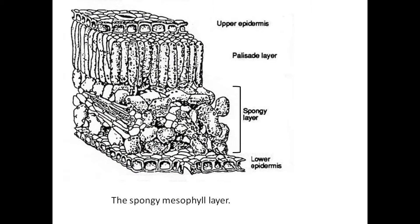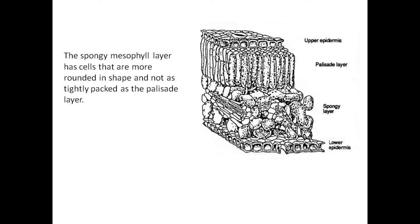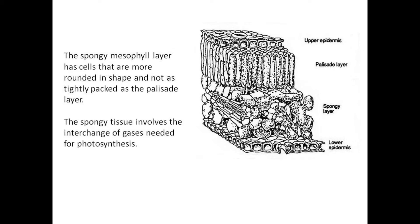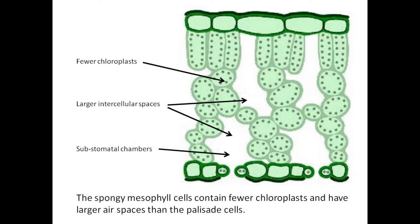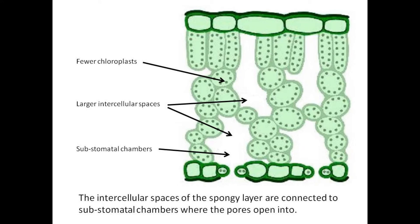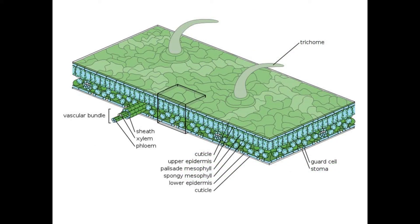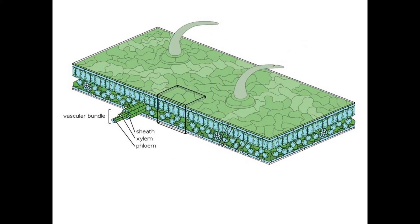Beneath the palisade layer is the spongy mesophyll layer. The spongy mesophyll layer has cells that are more rounded in shape and not as tightly packed as the palisade layer. The spongy tissue involves the interchange of gases needed for photosynthesis. The spongy mesophyll cells contain fewer chloroplasts and have larger air spaces than the palisade cells. The intercellular spaces of the spongy layer are connected to the substomatal chambers where the pores open into.